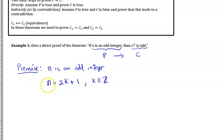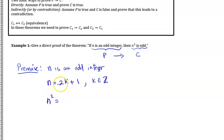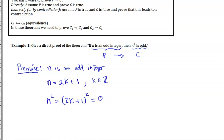That comes directly from the premises. Now I have to show something about N squared — I need to show N squared is odd. So I'll work with N squared: if N is 2K plus 1, then N squared is (2K+1) squared. Expanding that gives 4K squared plus 4K plus 1.